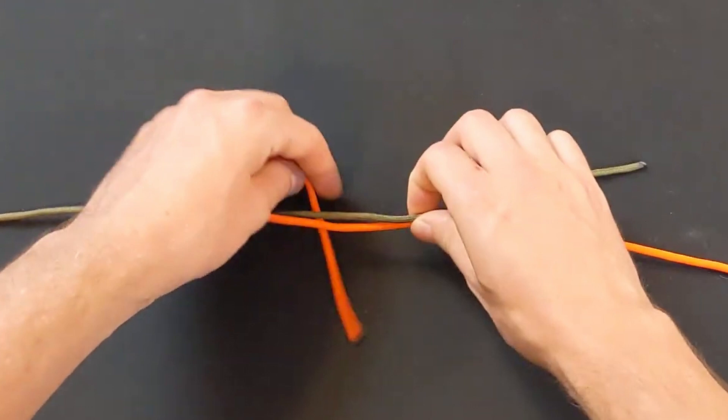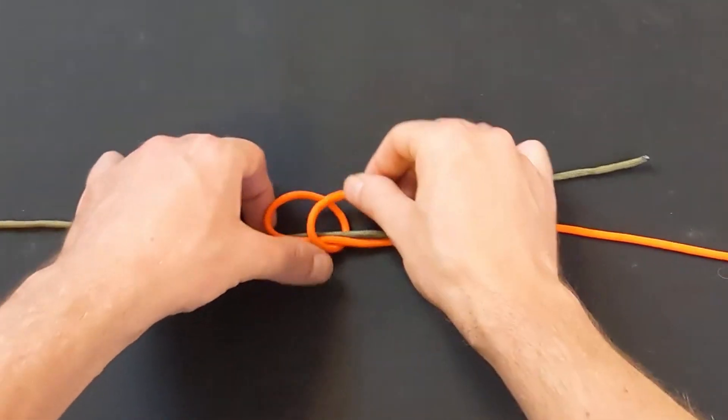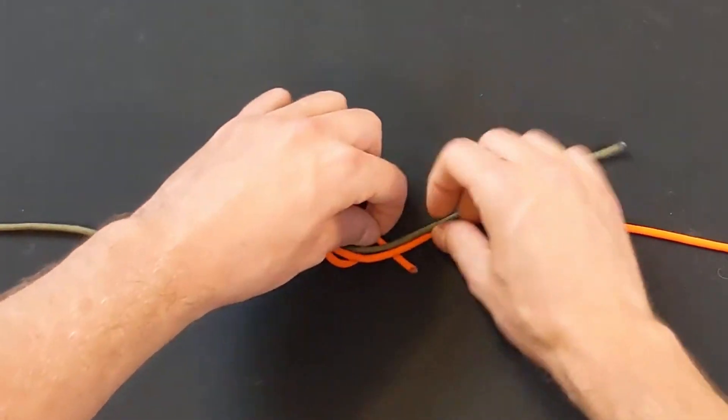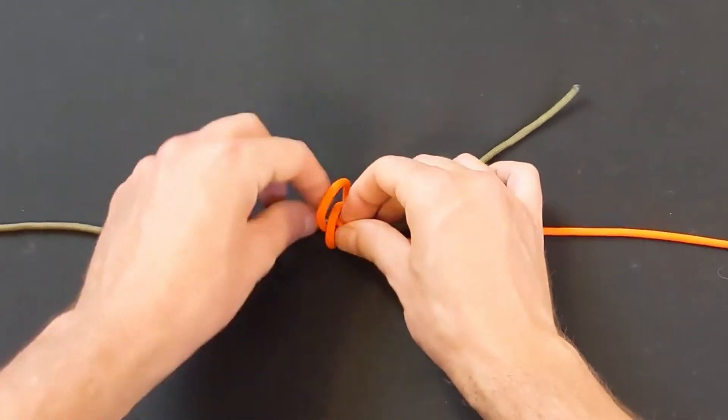Take one end over the top of the other, then back and underneath both lines. Make another loop in the same direction as the first, over top of both lines, then back and underneath. Feed the working end through both of these loops and tighten the knot.